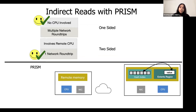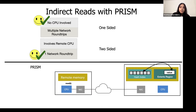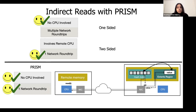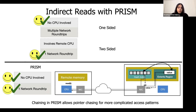Let's apply the PRISM API to the indirect reads example we saw earlier. Instead of an RPC or two one-sided RDMA reads, we can issue an indirect read PRISM call. The target address specified by the indirect read is interpreted as an address of a pointer, which is then dereferenced to obtain the value returned to the client. This only takes one network round trip and there's no CPU involved in the process. More complicated patterns of indirection can be implemented using operation chaining.